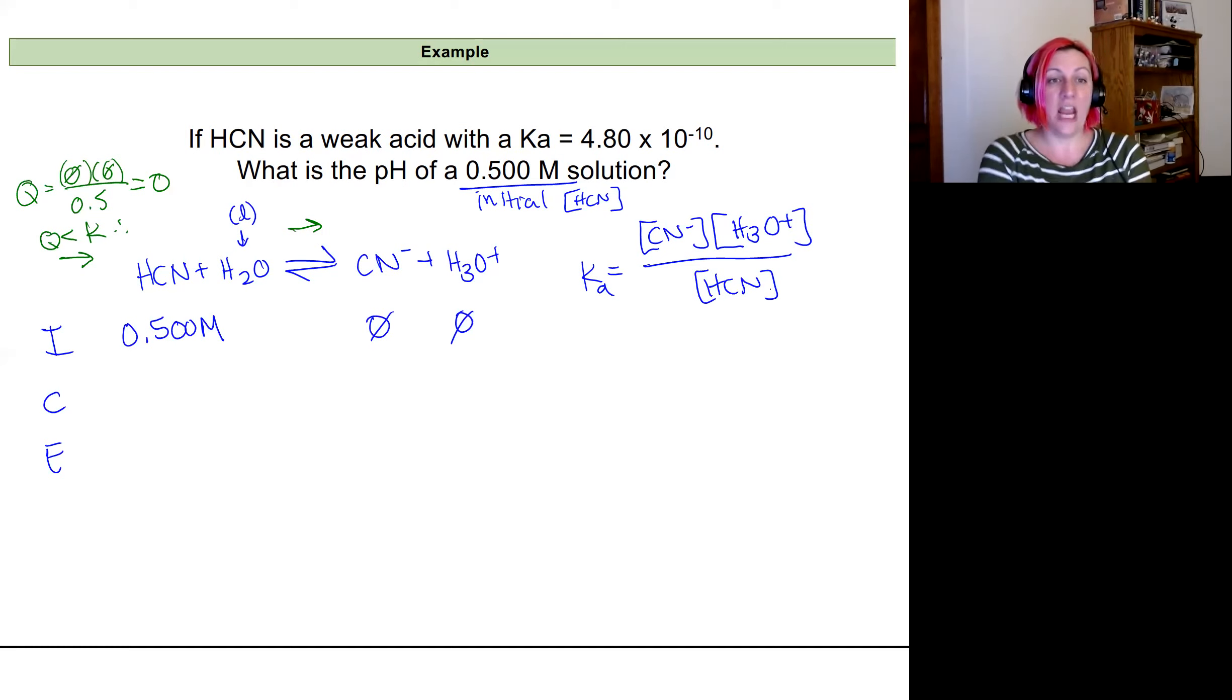So the change that's going to occur if we're going to form more products to reach equilibrium is I'll subtract X from my reactants and add X to my products. And it's just X. It's not two or three X because my coefficients are one. So I incorporate my coefficient here, but if the coefficient's one, then it's just X. So at equilibrium, I'll have 0.5 minus X for hydrocyanic acid and X for cyanide ion and X for hydronium ion.